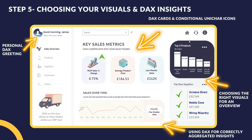Step five is choosing your visuals and DAX insights. We've chosen relevant visuals for an overview — cards, a time-based line chart — and we've given people the opportunity to navigate even outside of the Power BI environment. We've given them top insights for top new suppliers, for example. DAX gives us conditional icons so they know what a good figure is month on month. In an overview you'll usually be looking at bar and line charts, cards and so on. Get your DAX to correctly aggregate insights — within that gradient shape we created in Canva, we've got the max monthly sales at the bottom centre of the screen. We can give people personalised DAX metrics to add a human touch.